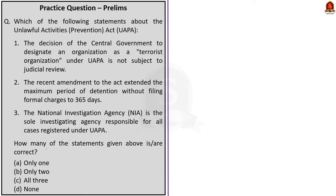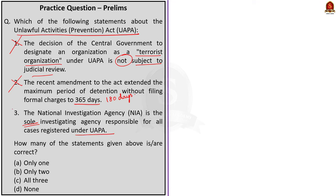Question 3 is about the Unlawful Activities Prevention Act. Statement 1 — The decision of the Central Government to designate an organization as a terrorist organization under UAPA is not subject to judicial review: Incorrect — the decision is subject to judicial review. Statement 2 — The recent amendment extended the maximum period of detention to 365 days: Incorrect — the maximum period of detention under UAPA is 180 days, and the recent amendment did not extend it. Statement 3 — NIA is the sole investigating agency for all cases under UAPA: Incorrect — other law enforcement agencies can also investigate. So the correct answer is option D.